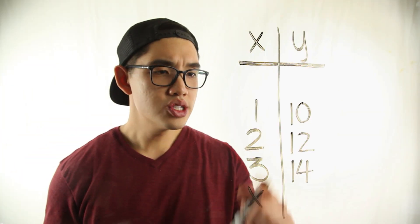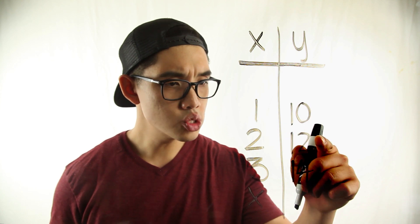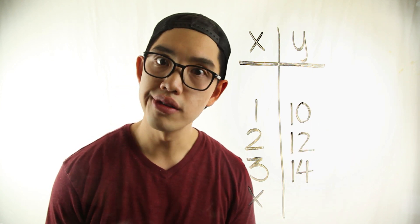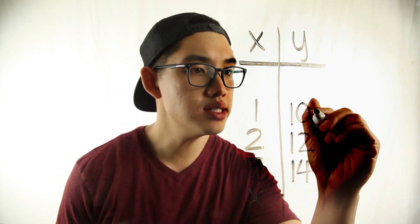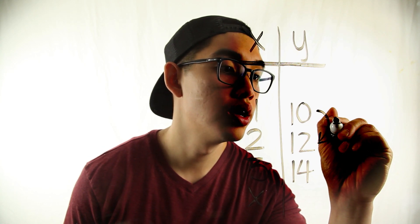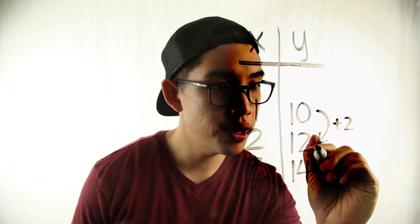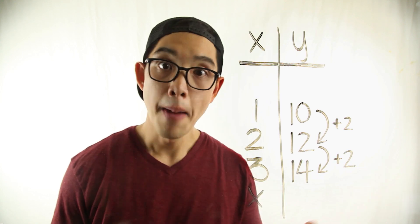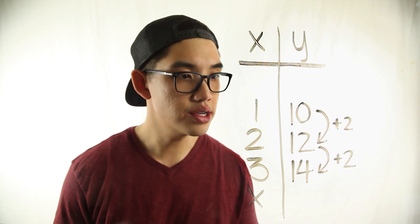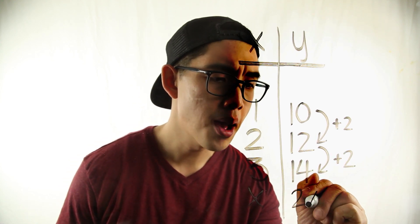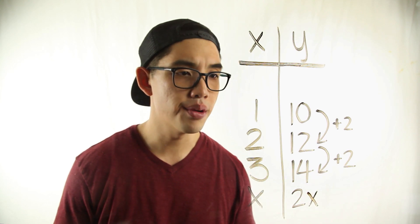Alright. So as you can see here we have ten, twelve, and fourteen and we see another pattern. Every time you go down you add by two. You go down one more time you add by another two again. Because of that you know that our function rule is gonna be two times the input plus another number.